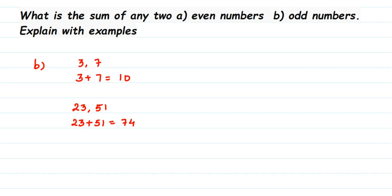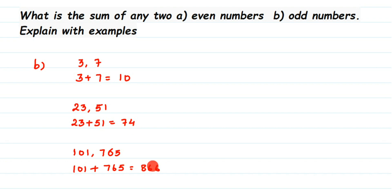Now let's take a three-digit example: 101 and 765. When you add them, 101 plus 765 gives you 866. You can see that in all three examples we always got an even number when adding two odd numbers. This works regardless of whether the numbers are one-digit, two-digit, or three-digit.